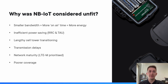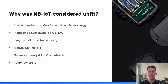There were also some inefficient power saving mechanics, which essentially left devices at the mercy of the network to control. There was concern of lengthy cell tower transitioning times and the knock-on effect of those. And finally, there was network maturity — LTE-M had obviously had some prioritization compared to that of NB-IoT.